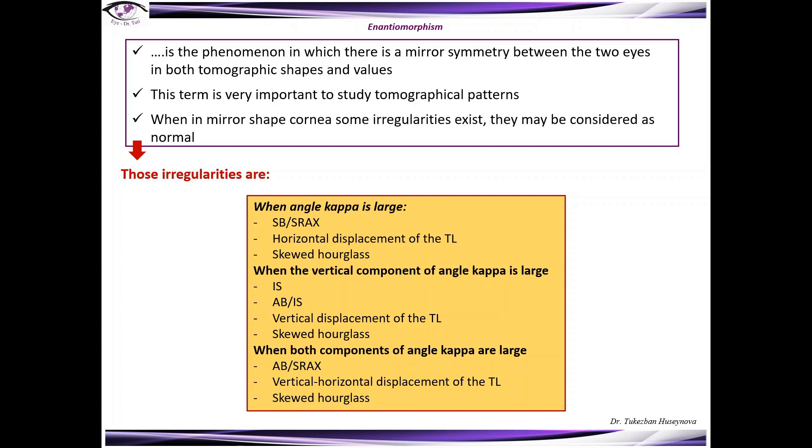When both components of angle kappa are large, asymmetric bow tie, skewed radial axis, vertical and horizontal displacement of the thinness location and again skewed hourglass are considered to be normal.